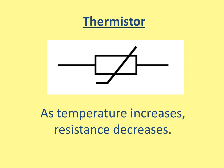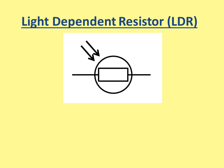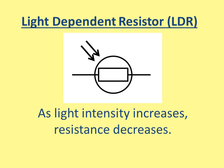This is a thermistor. Thermistors are very interesting and they're used a lot in this exam — as the temperature increases, the resistance will decrease. LDRs are also important; that stands for light dependent resistor. They're very similar to thermistors in a way, but as the light intensity increases the resistance will decrease. This is also a really important symbol to learn for this exam.